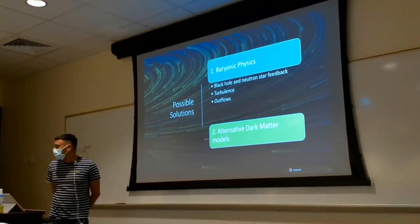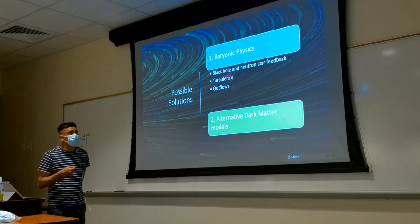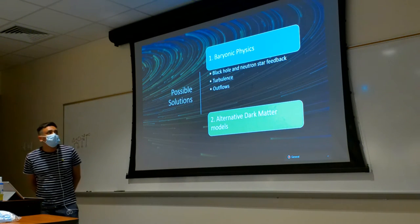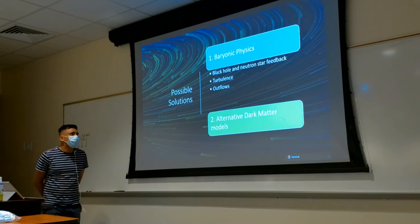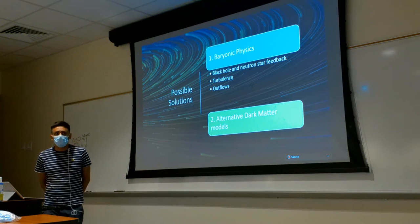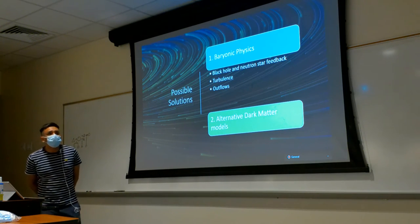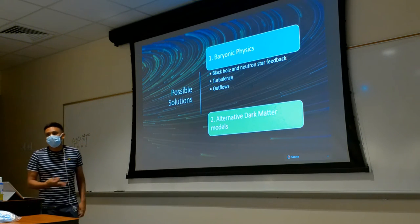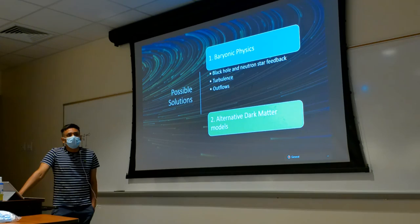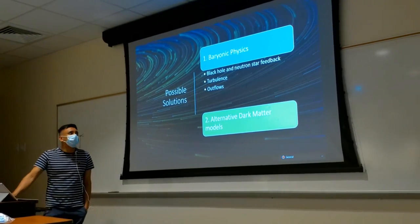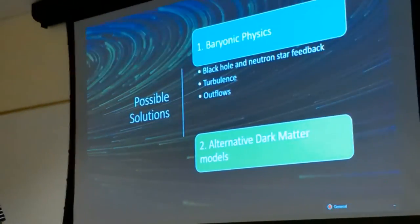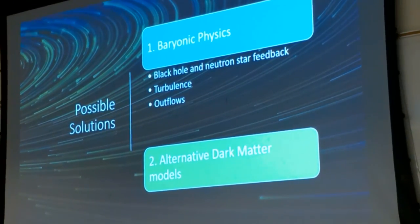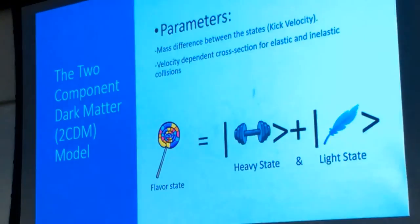There are two main classes of solutions. One comes from baryonic physics: feedback from black holes, AGN, neutron stars, turbulence, outflows — the list is long. However, baryonic physics has too many parameters and they are very much under-determined, with no conclusive work here. The other way to solve this is with alternative dark matter models, and this is what we'll be doing.